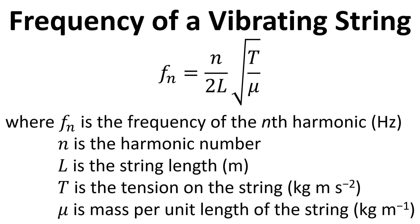We can also calculate the frequency of a vibrating string depending on the tension on the string. We have F subscript n equals the frequency of the nth harmonic in Hertz. n is the harmonic number. L is the length of the string. T is the tension on the string in newtons. And mu is the mass per unit length of the string. It's like the density of the string but it's per meter, so it's kilograms per meter.